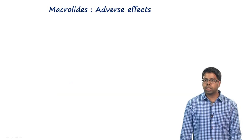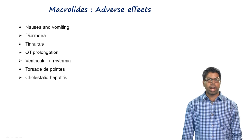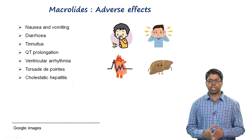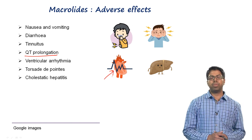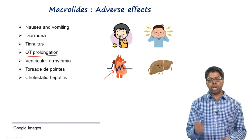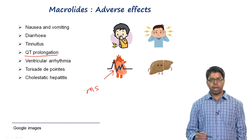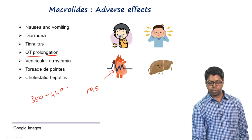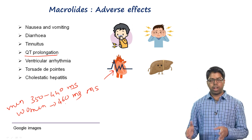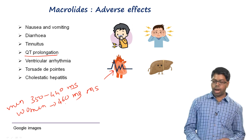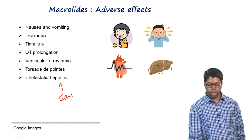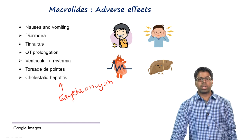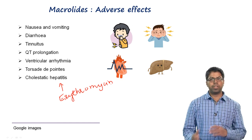Macrolide side effects include nausea, vomiting, diarrhea, and tinnitus. Less common but serious side effects include QT interval prolongation — normally 350–440 ms in men and ~460 ms in women; if greater than 500 ms it can cause ventricular arrhythmia and torsades de pointes. Erythromycin specifically is associated with cholestatic hepatitis, a condition of liver inflammation preventing bile flow from liver to the duodenum.